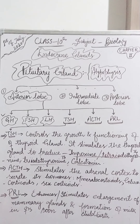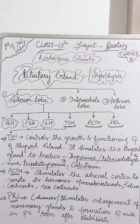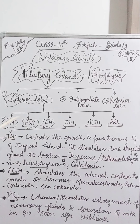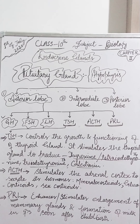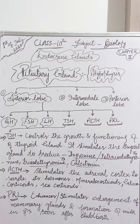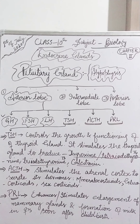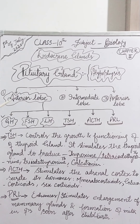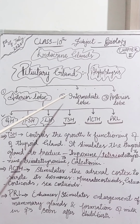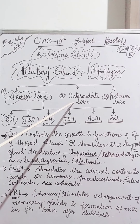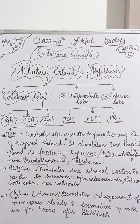With this, we have completed the hormones secreted by the anterior lobe of the pituitary gland, and I hope you have understood them. In our coming classes, inshallah, we will discuss the hormones secreted by the intermediate lobe as well as the posterior lobe of the pituitary gland. Till then, Allah hafiz.